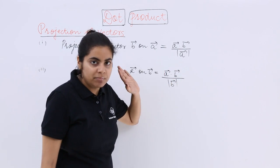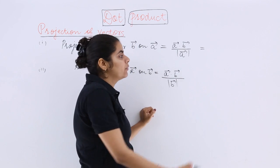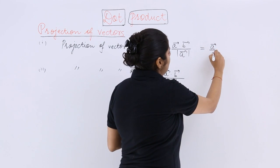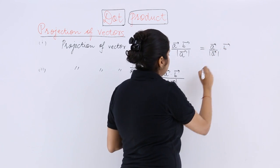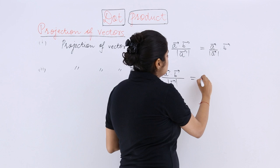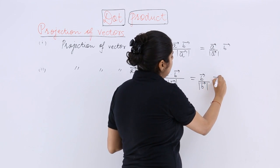So either you remember this formula or you can modify this formula a bit. You can take the A's to one side, so it is A vector upon magnitude of A multiplied by B vector. Here also you take the B's to one side, so it is B vector upon mod of B multiplied by A vector.